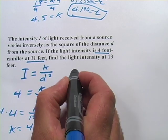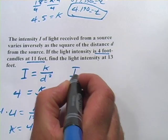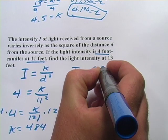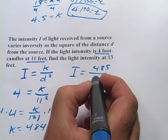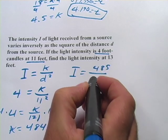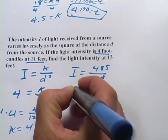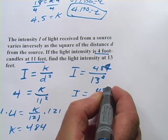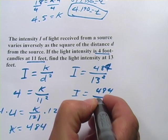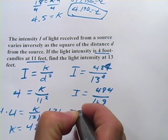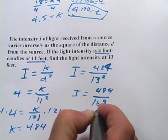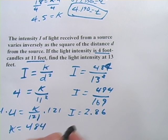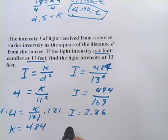So the formula is the intensity, and that's what we're looking for here, equals K, which we've solved for. It's 484, over the square of the distance. And now the distance is 13 feet, 13 squared. So that's going to be, oops, I put 45. I meant 44. It's going to be 484 divided by 169, and that is 2.86, we'll say, foot candles. And that is less than four, so that makes sense. So that's a little bit about direct and inverse variation squared.